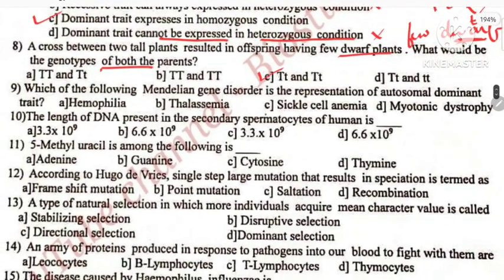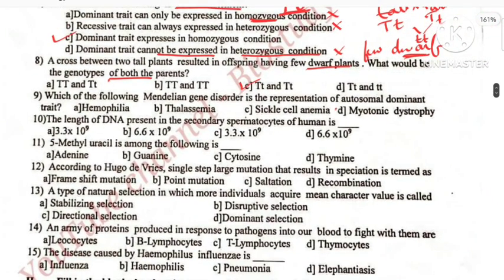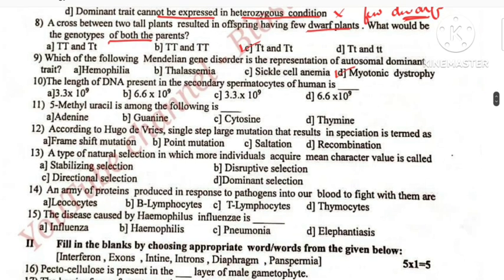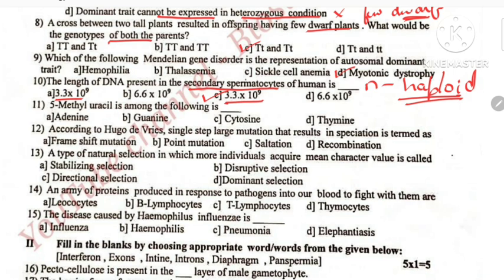Which of the following Mendelian gene disorder is autosomal dominant? It is myotonic dystrophy. Length of DNA in secondary spermatocyte — secondary spermatocyte is haploid, so we determine the haploid genome content. The molecular basis: haploid genome content is 3.3 × 10 raise to 9. The answer is plus 9.